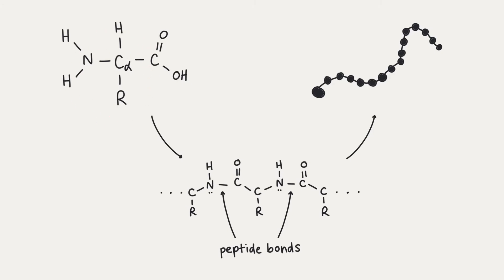Each of the 20 amino acids has a characteristic side chain. These amino acids are linked to each other by a peptide bond, which are bonds formed between the amino group of one amino acid and the carbonyl group of another. One after the other, they're bound together to form a long polypeptide chain.